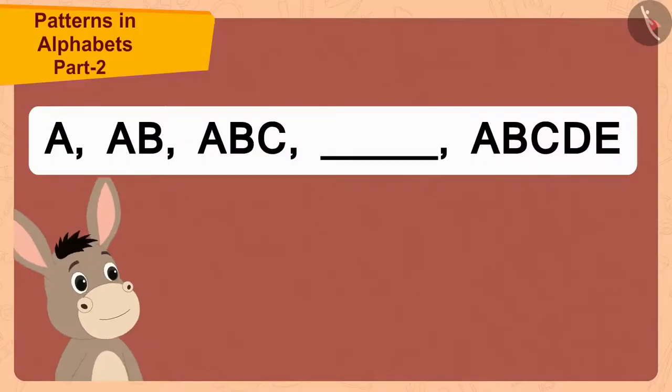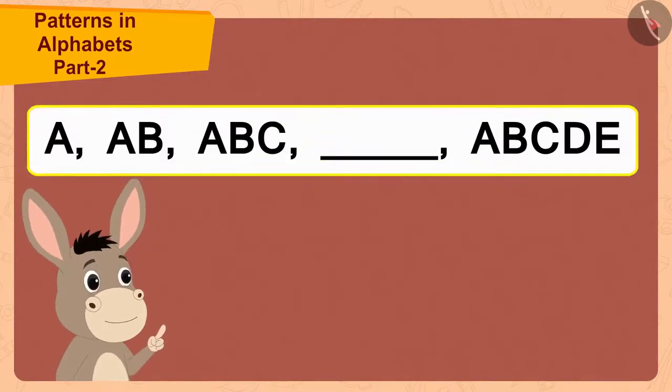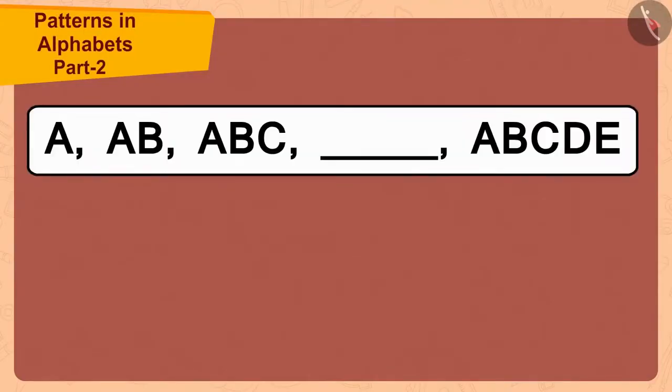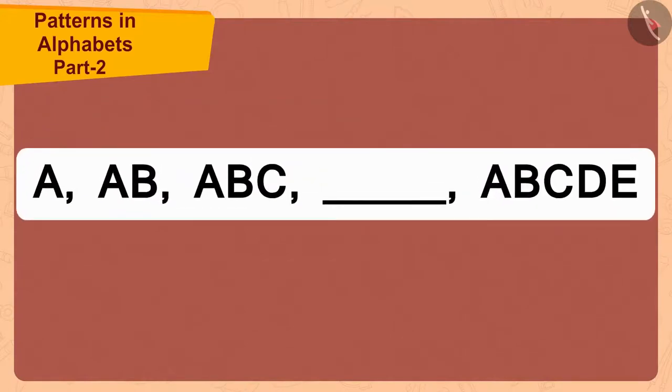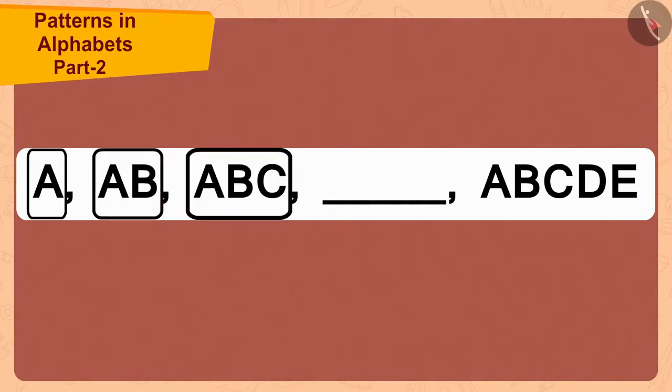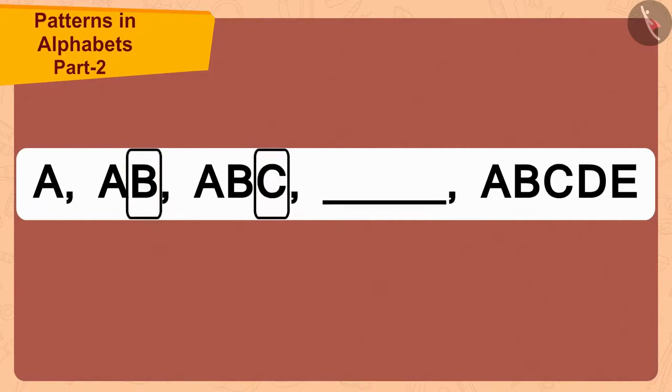Bola was shocked. He could not understand the rule of this pattern. Children, can you help Bola find the rule of this pattern? If you want, you can stop the video and find the answer. If we look at this pattern closely, we will find that every time the letters are being repeated, the next letter is being added to it. Like, the first letter is A. The next time A is repeated, B is added to it. And when A, B, both these letters are repeated, then the next letter, C, was added to it. So, now, what will be the letters that come in the blank space?